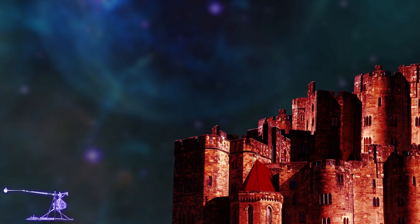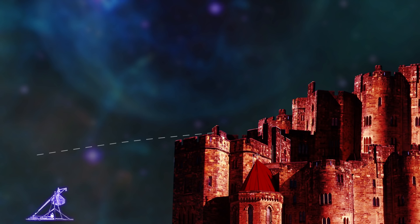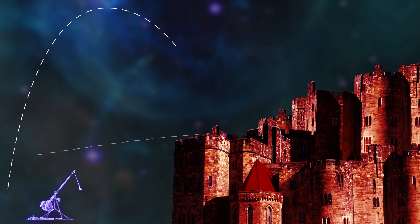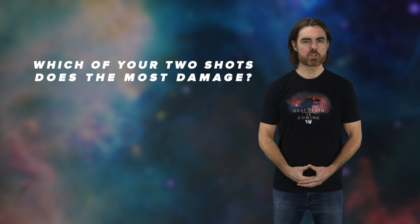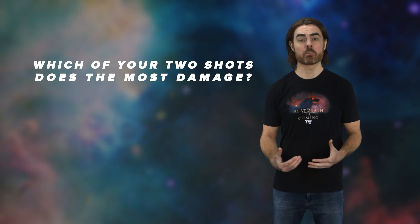My first question requires no math. You fire your trebuchet and the projectile flies upwards to slam into the top of the tall fortress wall — nice one. Now you try a different shot. You raise the counterweight to the same height as last time and let it fall. This time you release the projectile a little earlier, so it takes a more vertical trajectory. It flies high into the air and then falls to hit exactly the same spot on the wall. You notice that in both shots the counterweight continued to swing after release, and in both shots that post-release swing reaches the exact same height. Which of your two shots does the most damage?